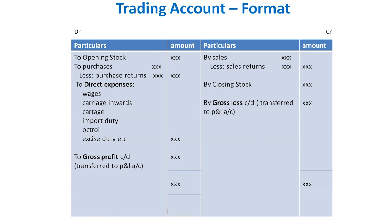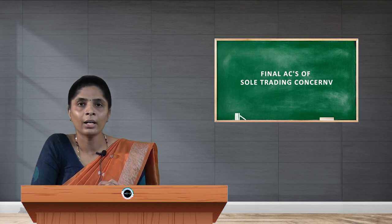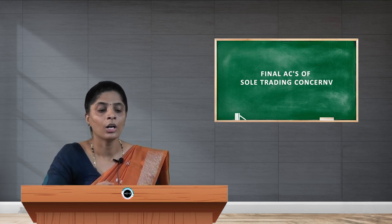After entering all five transactions, the very important step is to ascertain the gross profit or gross loss by balancing the trading account — taking the total of both sides. For example, if the total of the credit side is one lakh and the total of the debit side is 80,000, then the higher side total is taken on both sides. The balancing figure on the debit side is 20,000, which is the gross profit. When the credit side is more than the debit side, the result is gross profit. When the debit side is more than the credit side, the result is gross loss. This gross profit or gross loss is transferred to the profit and loss account. That is all about the trading account.